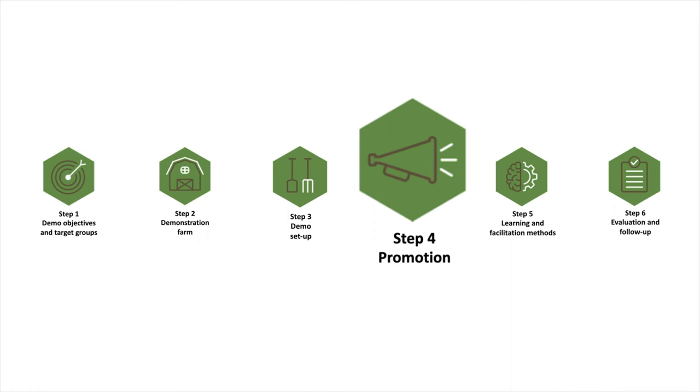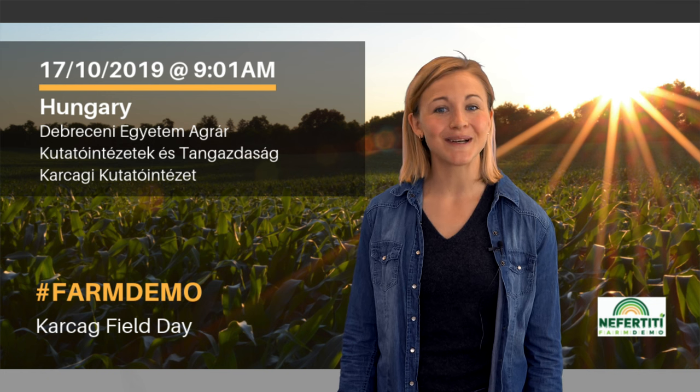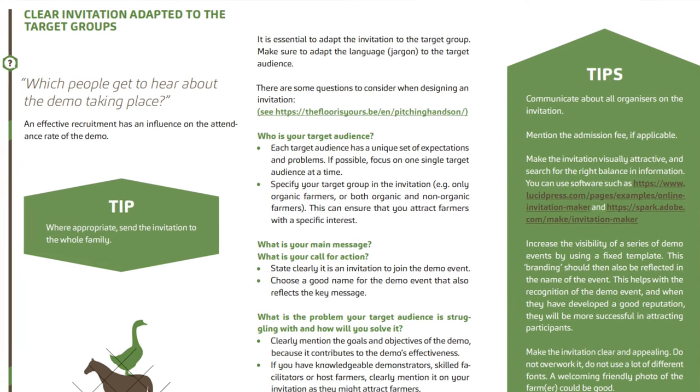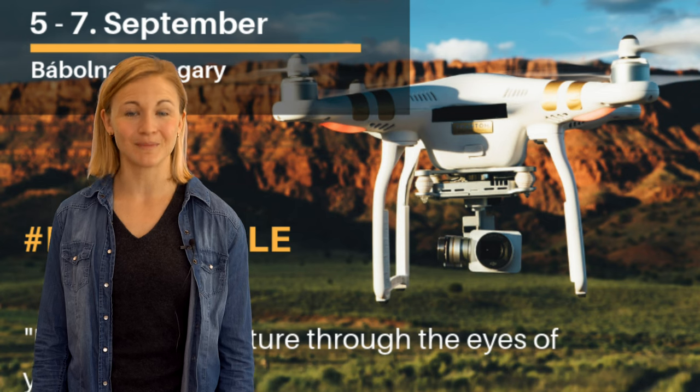Step four is about promoting your event. Invitations can be spread by using flyers, letters, emails, but also via newspaper articles, websites, social media, or even promotions on radio or television. On the Farm Demo Training Kit, you can find tips and templates to create your own promotion materials.